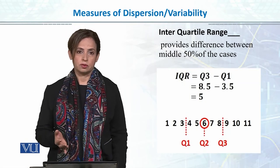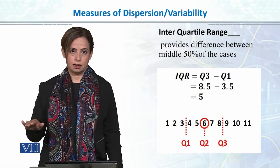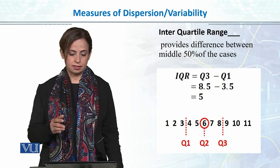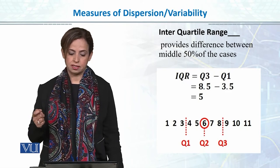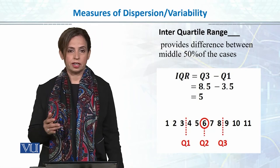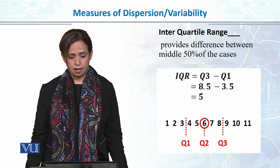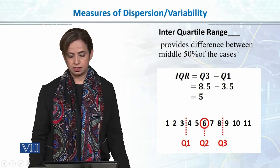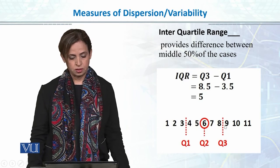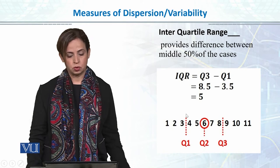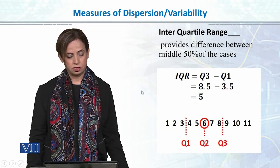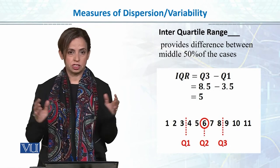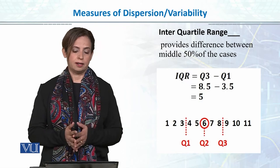Here is a simple example to show how to calculate interquartile range. Suppose I have data: 1, 2, 3, 4, 5, 6, 7, 8, 9, 10, and 11. I calculate Q3, which is the 75th percentile — it is 8.5. And Q1, which is the 25th percentile. I subtract Q1 from Q3 and get that the dispersion or variability within the middle 50% is approximately 5.